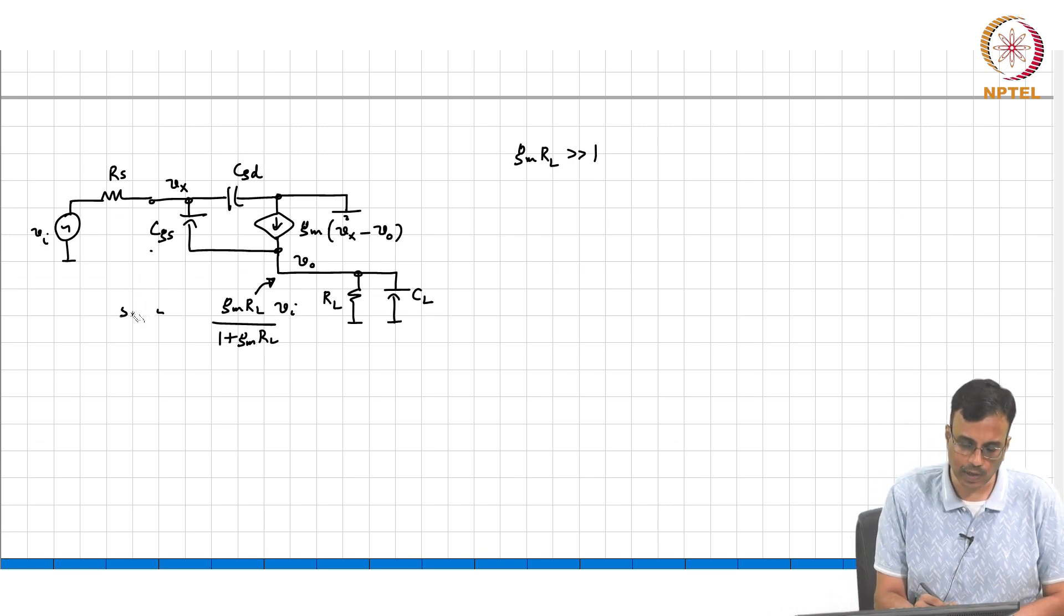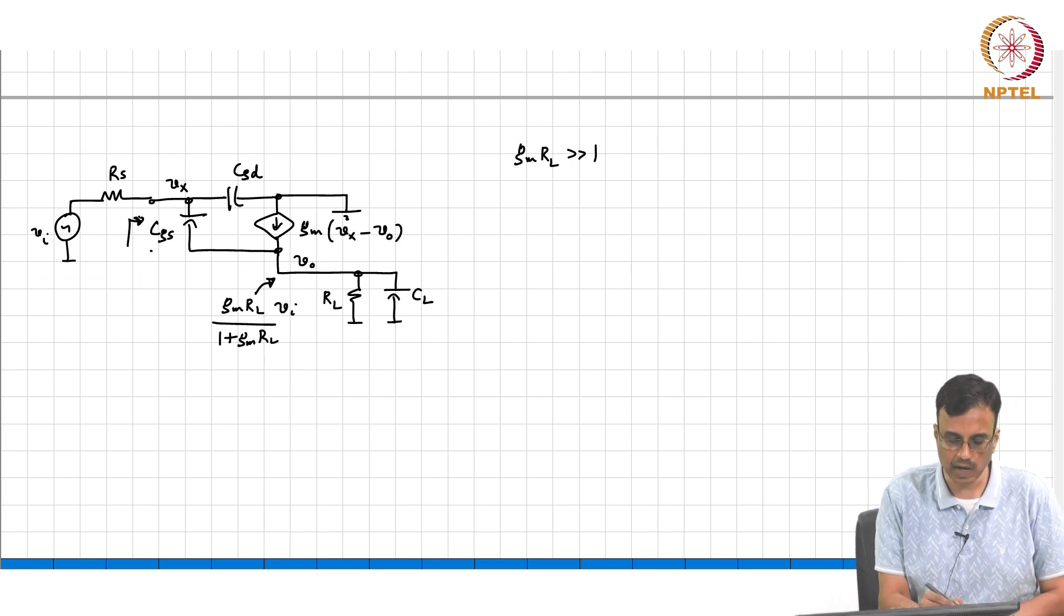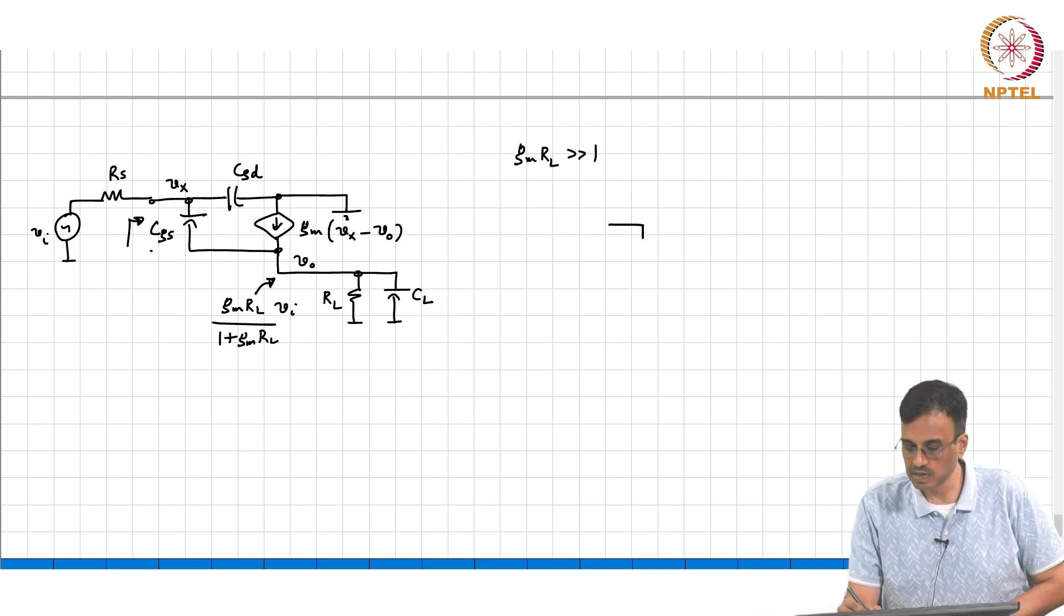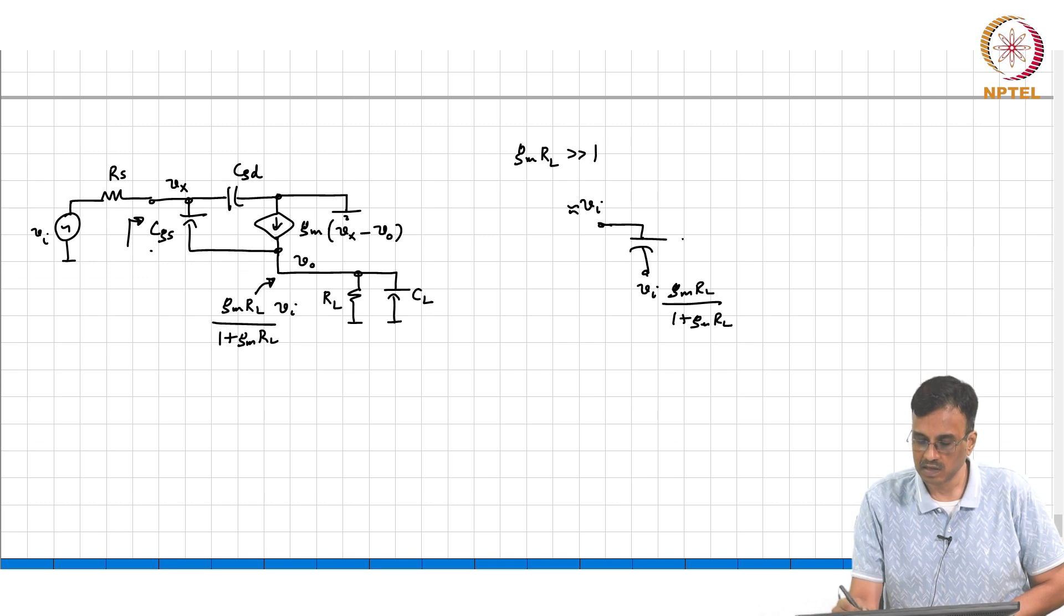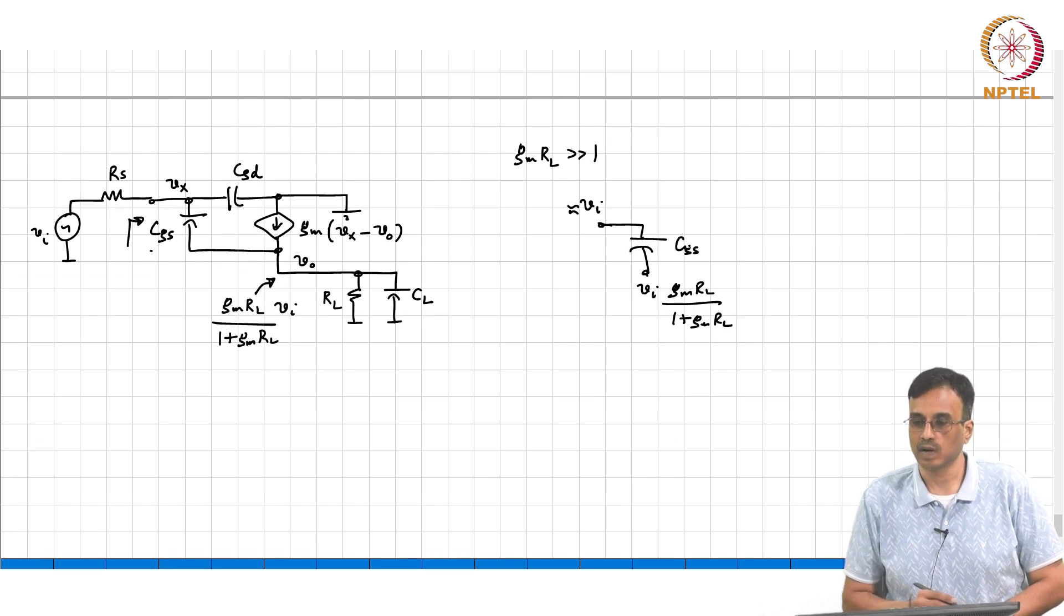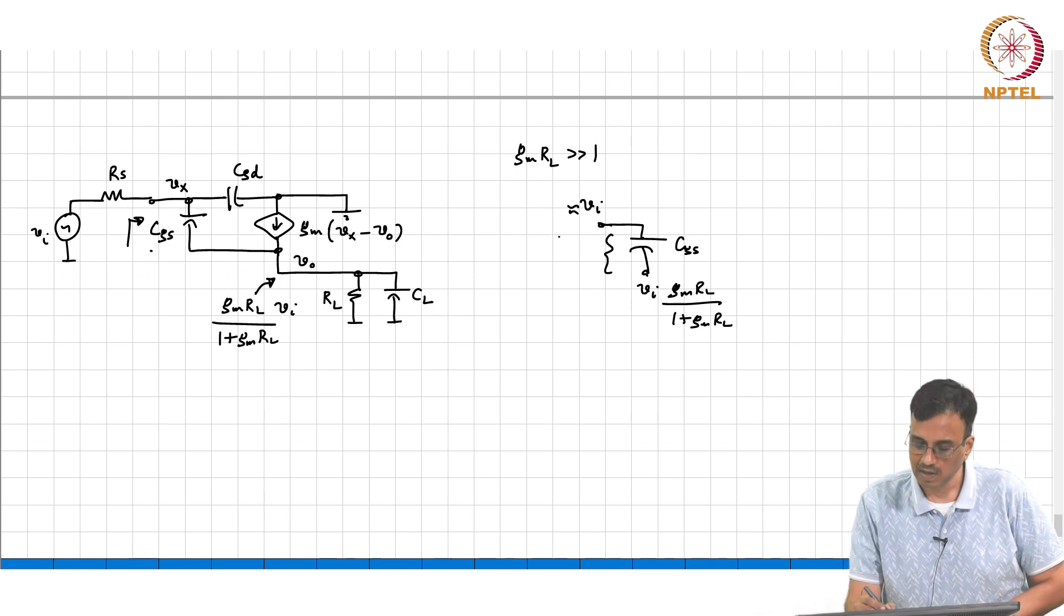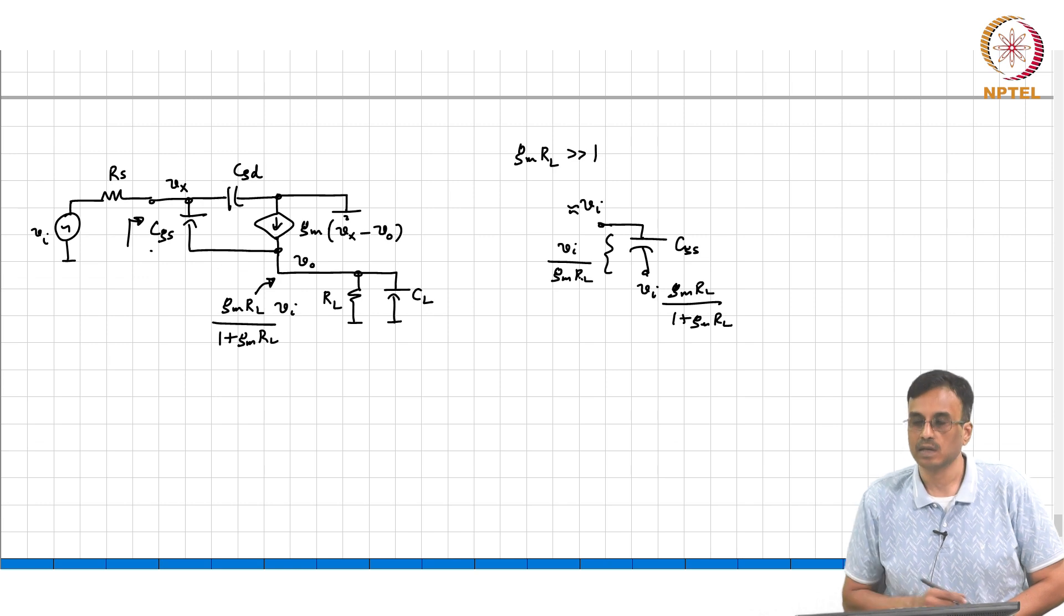So effectively what does CGS look like? What is the effective capacitance looking in here? This is CGS, this is VX which is approximately VI at low frequency. This voltage is approximately VI*GM*RL over 1 plus GM*RL. What is the voltage across this capacitor?